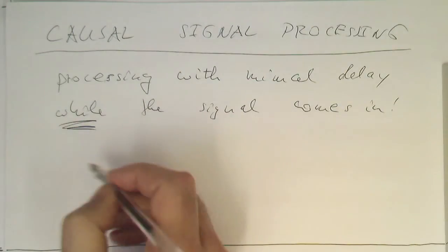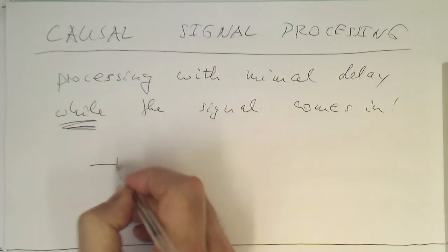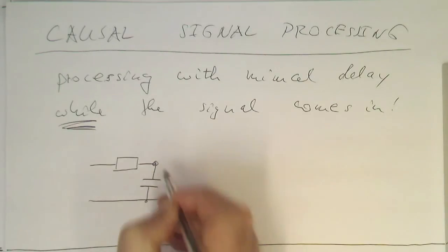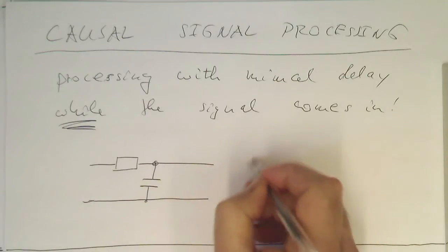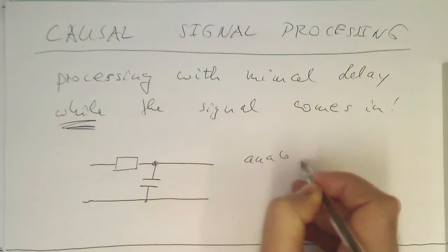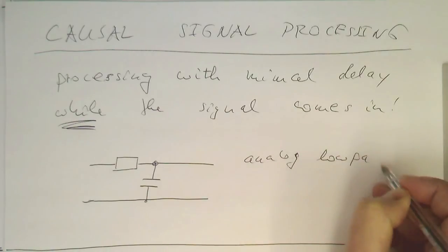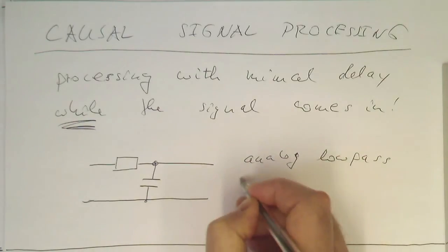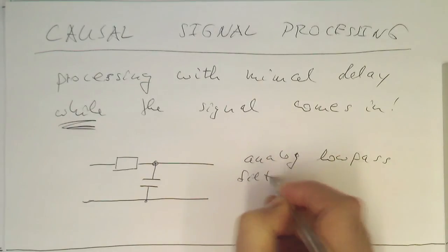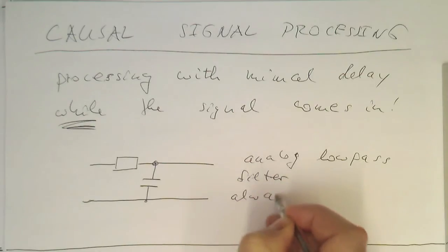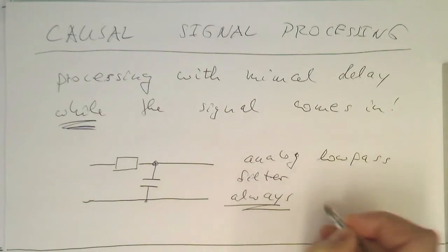Obviously, a classical example, if you think of an analog circuit, this is obviously always doing real-time processing. So our analog circuit here is like an analog low-pass filter. The analog low-pass filter is always real-time.